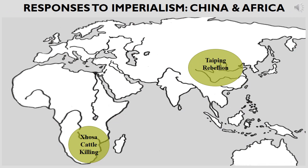The increased economic, cultural, and military presence of imperialistic states in Asian, African, and Oceanic societies rendered varied responses by indigenous populations. In some cases, increasing discontent with imperial rule led to rebellions within the most vulnerable, underdeveloped societies — as in the case of the Taiping Rebellion in China, or the Xhosa cattle-killing movement in southern Africa.